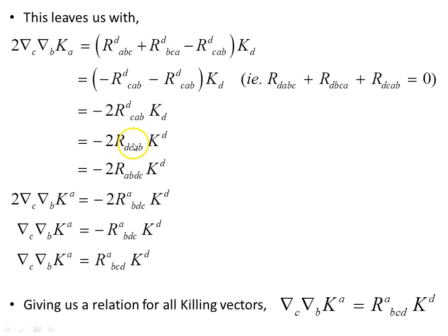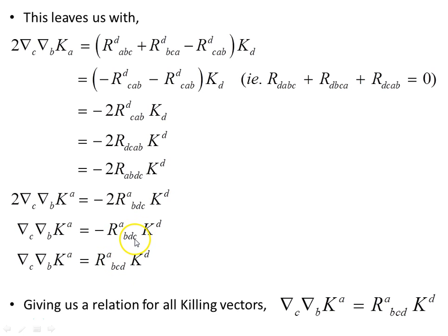Then we appeal to the symmetry of the Riemann tensor and swap the (dc) and (ab) index pairs — they are symmetric in that operation so there's no sign change. Next, on the right we raise the a-index on the Riemann tensor and simultaneously raise it on the Killing vector. We then divide through by two on both sides, and finally swap the d and c indices — an anti-symmetric operation — so the minus sign disappears. This gives us a useful relationship for all Killing vectors.